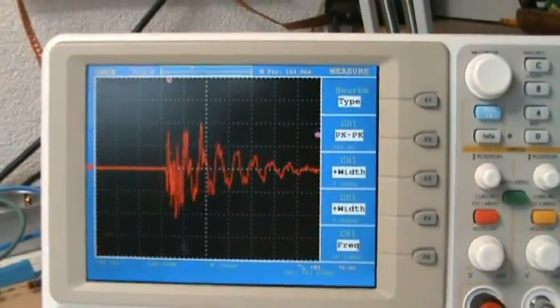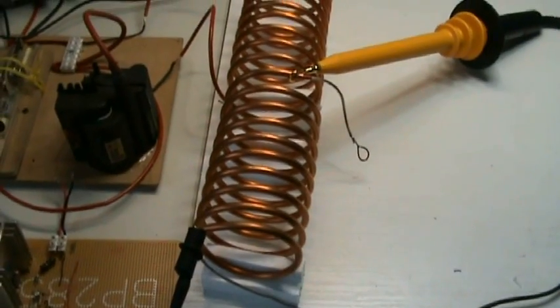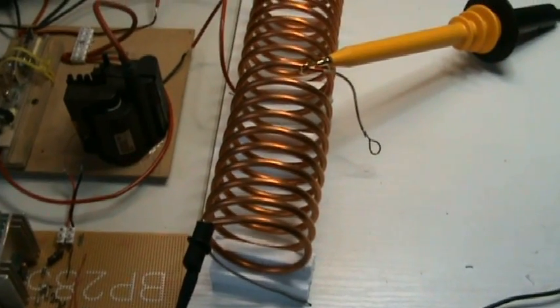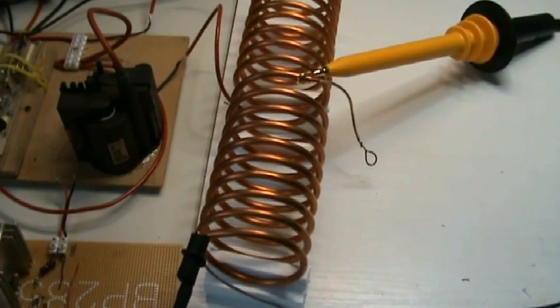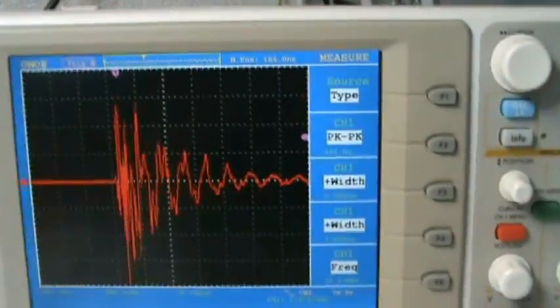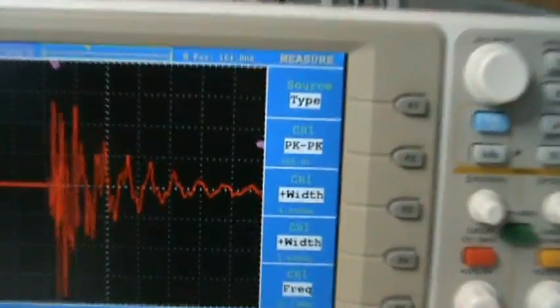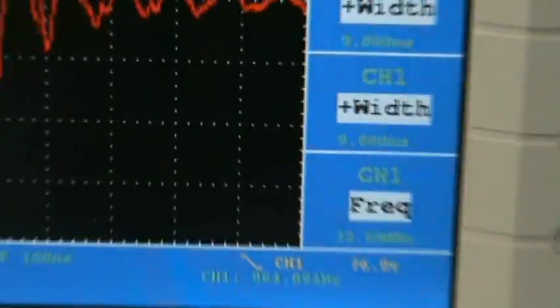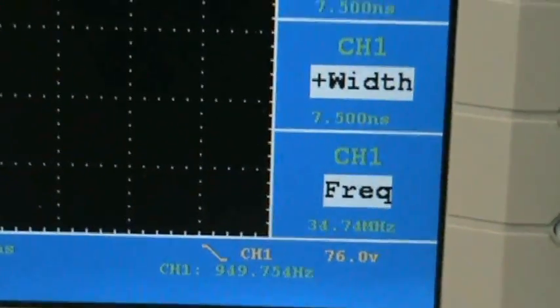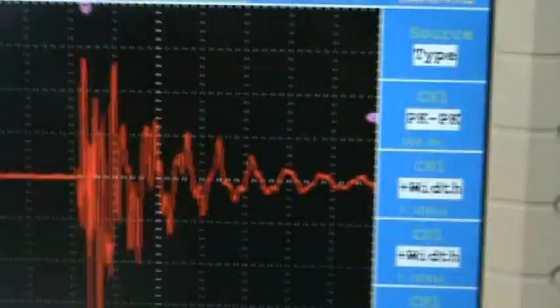Similar measurement as before I now have the probe across the tubing instead of the inner wire. And we have this signal. It's somewhat more peaking 350 to 400 volts and ringing at 28 to 34 megahertz.